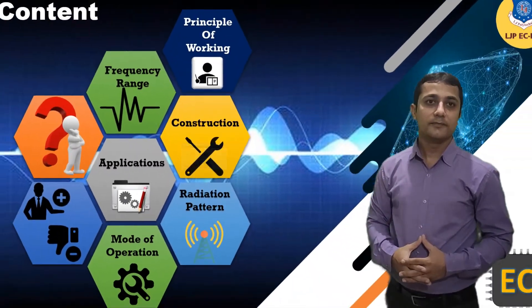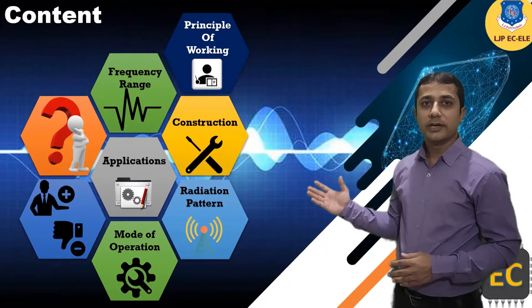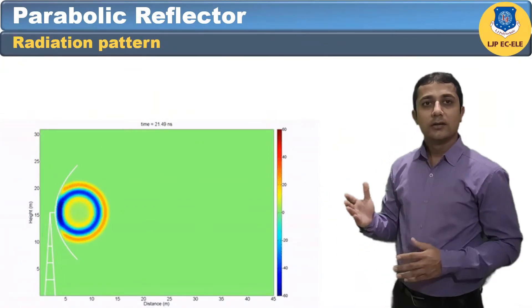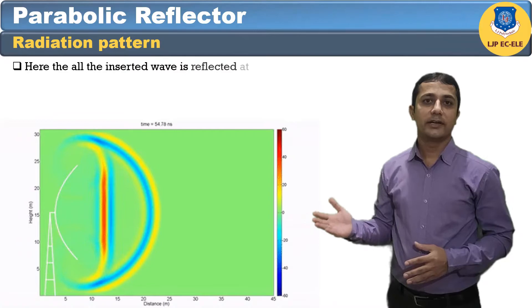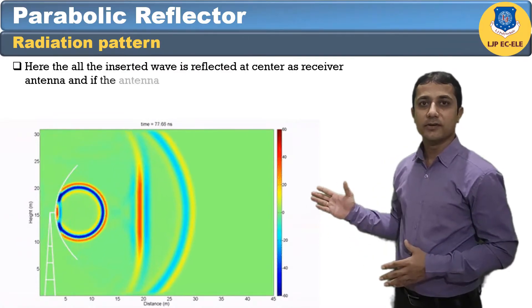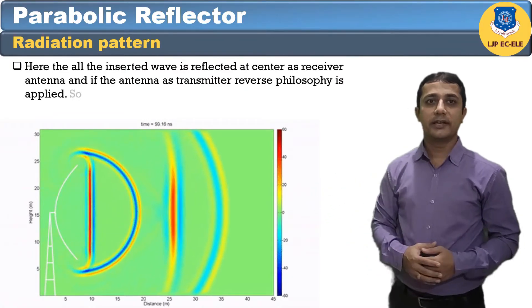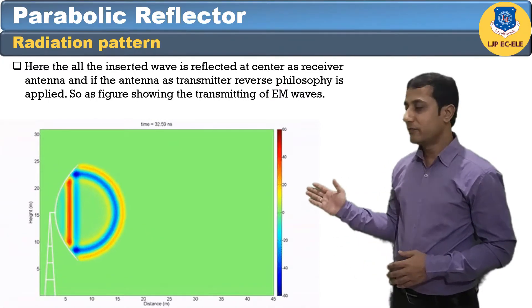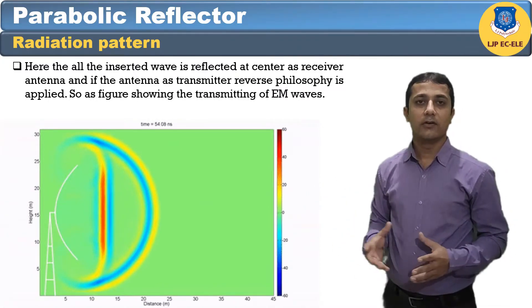Next is radiation pattern. The figure shows the radiation pattern of the parabolic reflector. Here all the incident wave is reflected at the center as a receiver antenna, and if the antenna is a transmitter, reverse philosophy is applied. The figure shows the transmitting of EM wave.